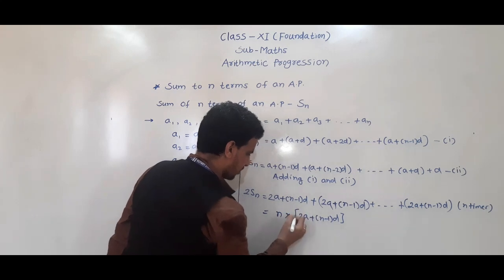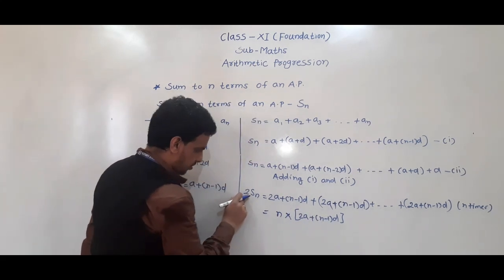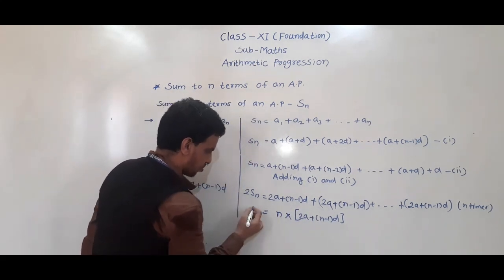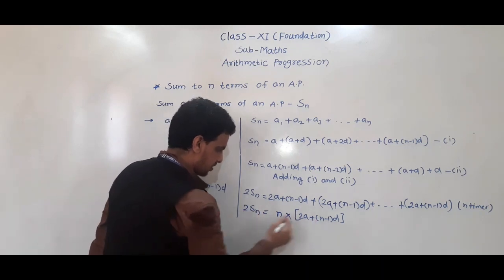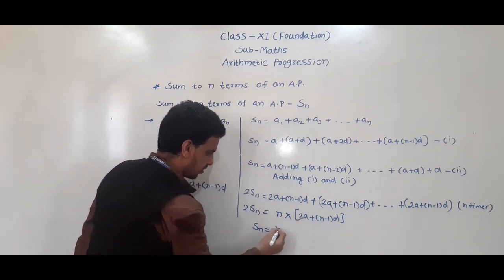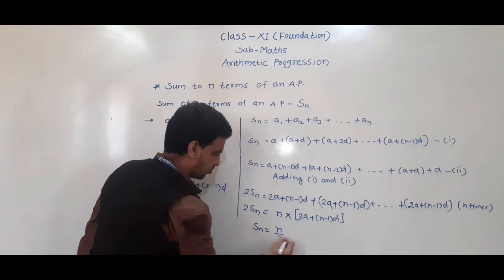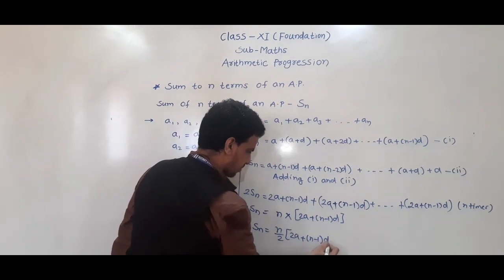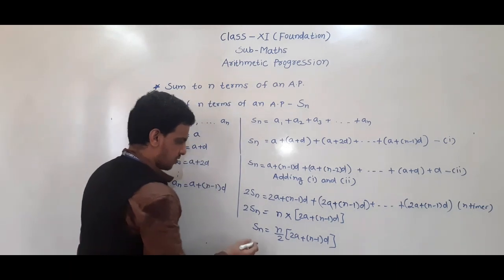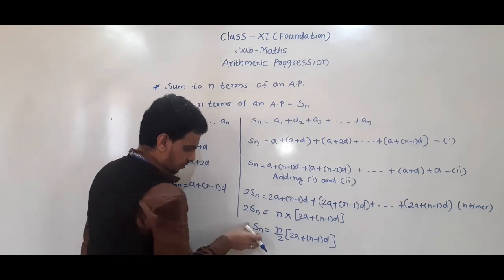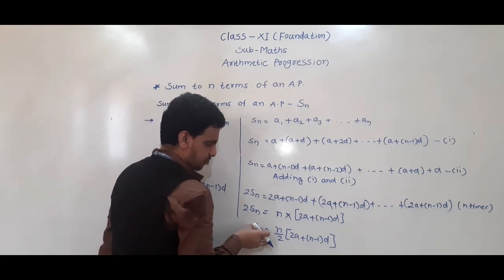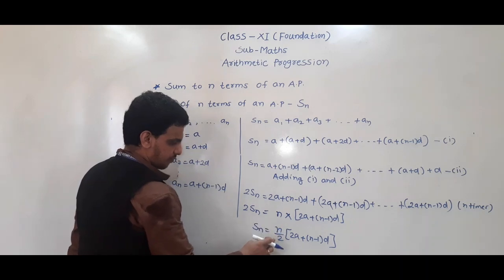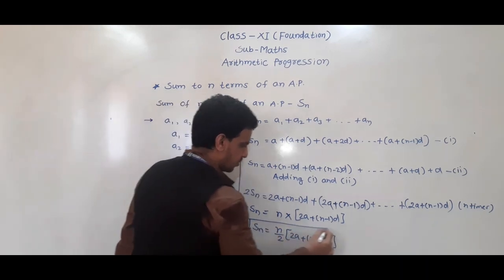Shifting the 2 to the other side, Sn = n/2 × [2a + (n−1)d]. So the formula for the sum of n terms of an AP is Sn = n/2 × [2a + (n−1)d].